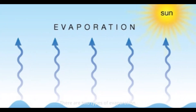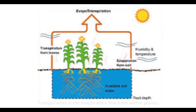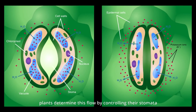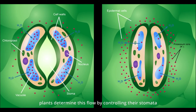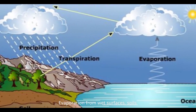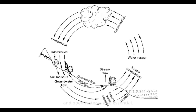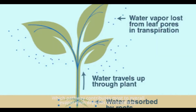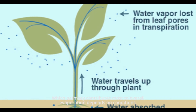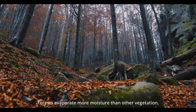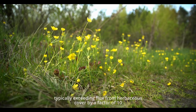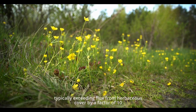There are two types of evaporation. Transpiration is the evaporation flux from within plants. Plants determine this flow by controlling their stomata — pores on leaves and other surfaces. Evaporation from wet surfaces, soils, and open water is also essential. Which pathway contributes most to overall evaporation depends on conditions. Forests evaporate more moisture than other vegetation, typically exceeding flux from herbaceous cover by a factor of 10.